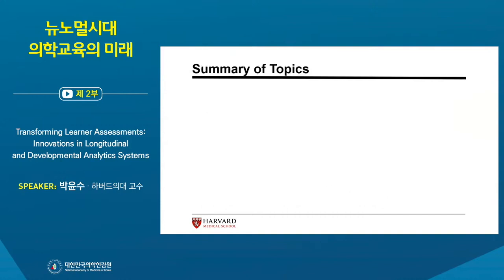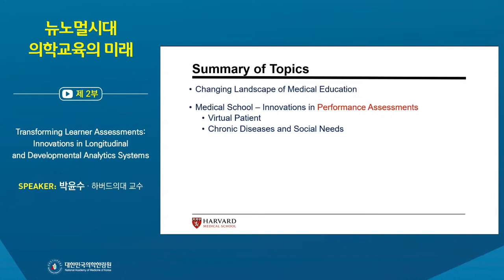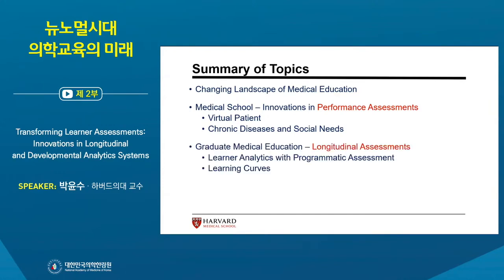This presentation is organized around the following topics. I first present an overview of the changing landscape of medical education in North America. I then provide examples of innovations in performance assessments at the medical school level, including virtual patient assessments and chronic diseases and social needs assessments. Next, I move into graduate medical education during residency, looking at longitudinal assessments targeting growth and developmental improvements, and I conclude with summary and recommendations for future directions.